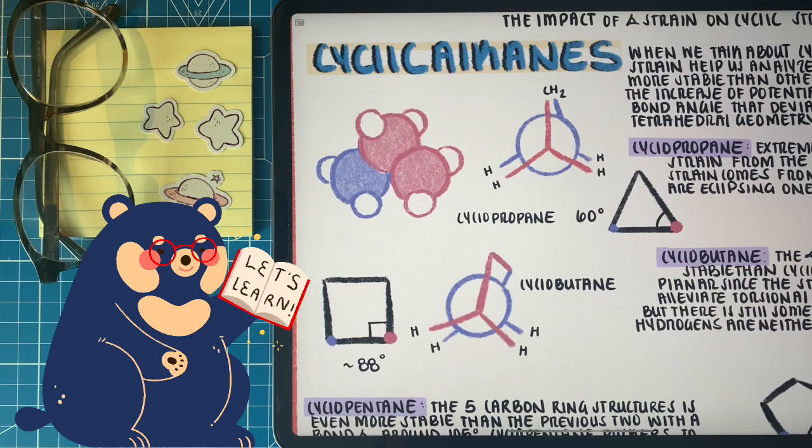A little bit more stabilized when we talk about cyclobutane, but this isn't a great deal more stabilized. We just have a bond angle of around 90 to 80 degrees, and the hydrogens aren't fully eclipsing, nor are they fully staggered. So it's kind of like an in-between.